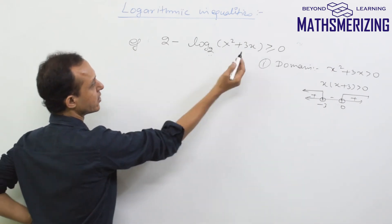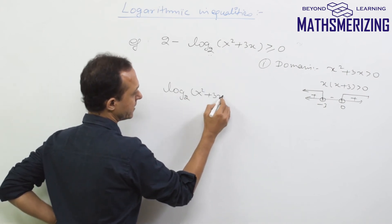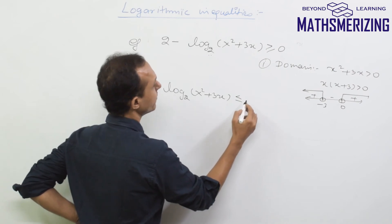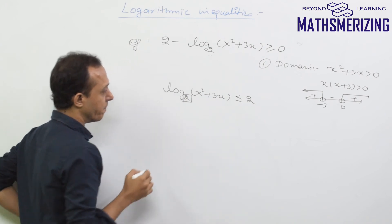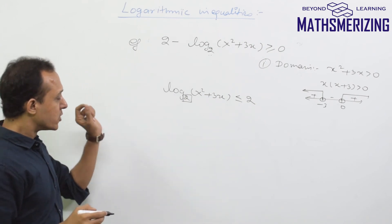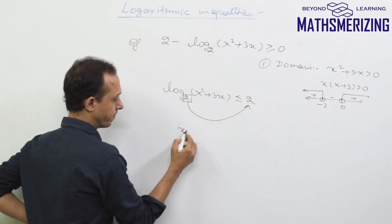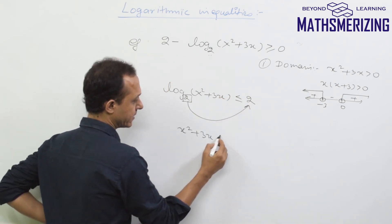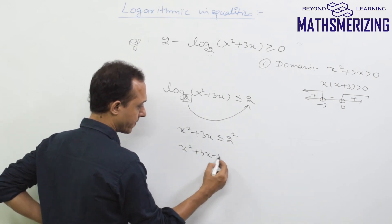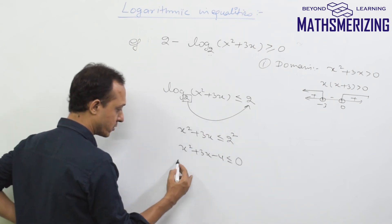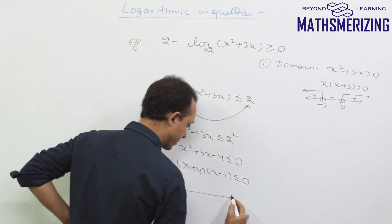Taking the log term to the right-hand side, we get log base 2 of (x² + 3x) ≤ 2. The base is 2, which is greater than one, so when we take antilog the sign does not change. This gives x² + 3x ≤ 2², which simplifies to x² + 3x − 4 ≤ 0, factoring as (x + 4)(x − 1) ≤ 0.